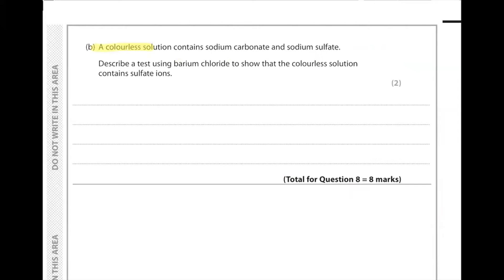Part B. A colorless solution contains sodium carbonate and sodium sulfate. Describe a test using barium chloride to show that the colorless solution contains sulfate ions. To test for sulfate ions, we must add barium chloride. And before adding barium chloride, we must also add dilute nitric acid.